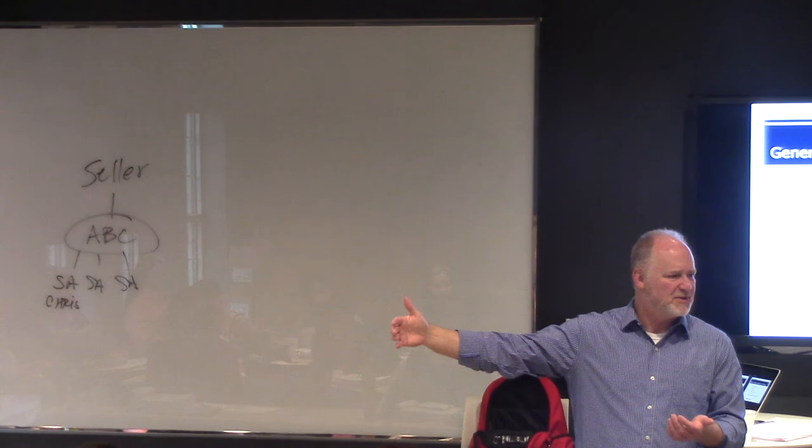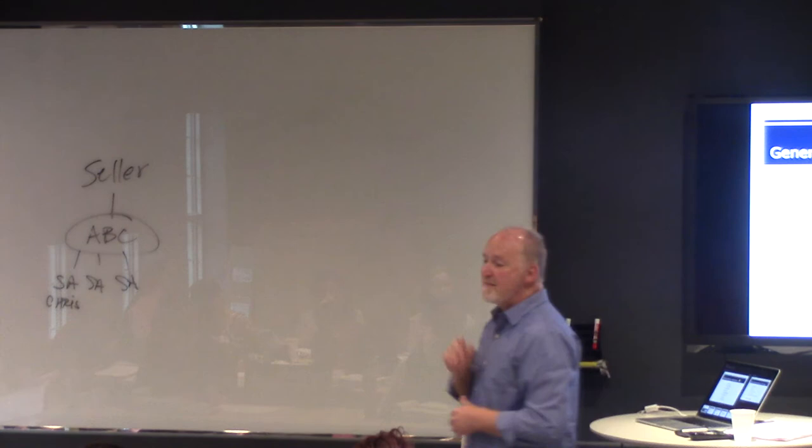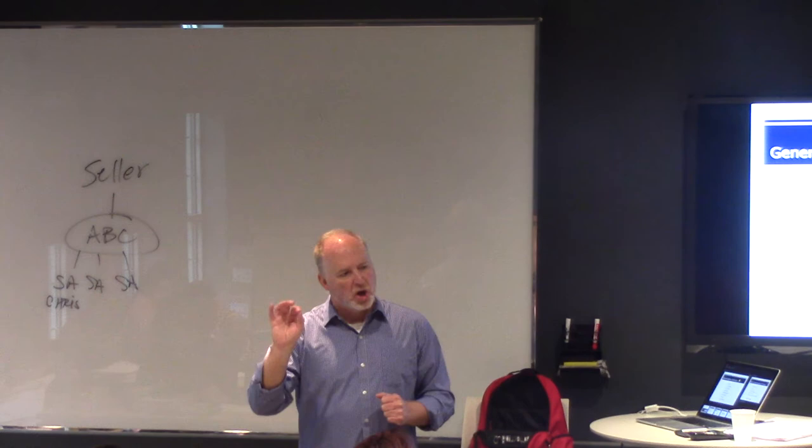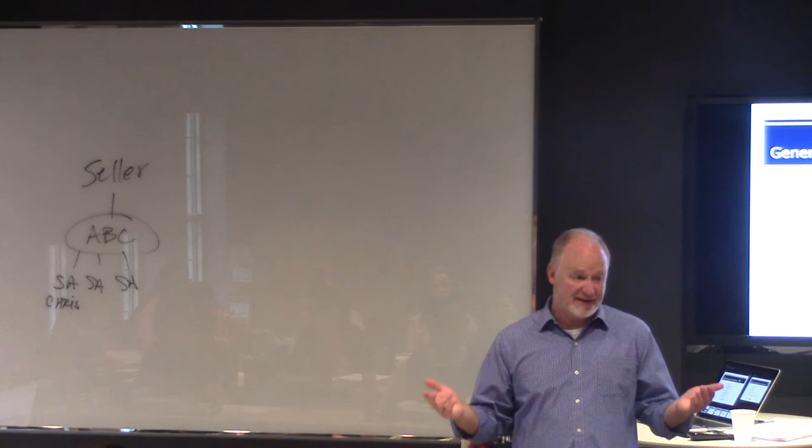Can you see where that might be confusing? To buyers? I'll tell you how confusing it was. In the late 80s, they actually did a survey. The Federal Trade Commission did a survey. They asked buyers. They said, hey, buyer, in your last transaction, who was the agent driving you around? Who did that agent work for? And somewhere to the tune of 75% to 78% of buyers said, well, of course my agent worked for me.